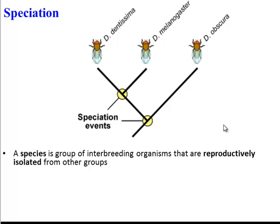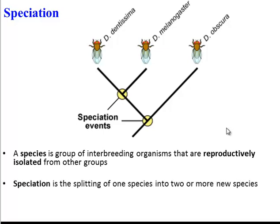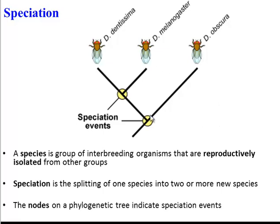So humans can reproduce with each other, but they can't successfully reproduce with chimpanzees. Speciation is the process where one species, like this ancestral species, splits into two or more separate species. And if you look on a phylogenetic tree, these nodes or points will tell you speciation events occurred.